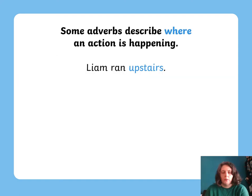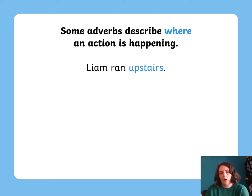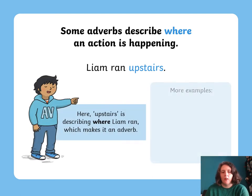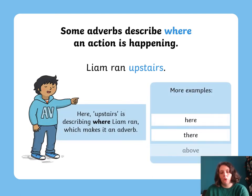Some adverbs can tell us where things are happening. 'Liam ran upstairs' — where did he run? He ran upstairs, so 'upstairs' is the adverb. Some more examples of adverbs of place are: here, there, and above.